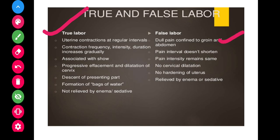In true labor, uterine contractions occur at regular intervals, contractions are frequent, and intensity and duration increase gradually. There is an associated show — a mucus plug seen outside the vagina. There is progressive effacement and dilatation of the cervix, and descent of the presenting part continues toward the pelvic floor. In false labor, only dull pain confined to the groin and abdomen is felt, pain interval does not shorten, and intensity remains the same with no cervical dilatation.